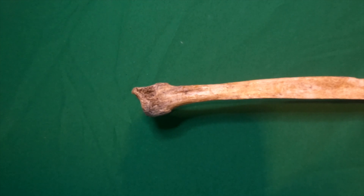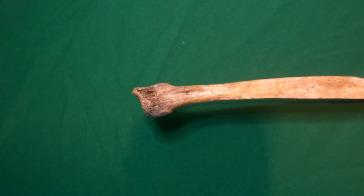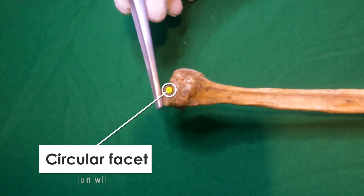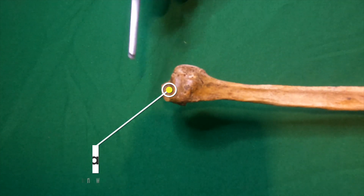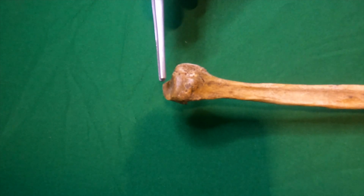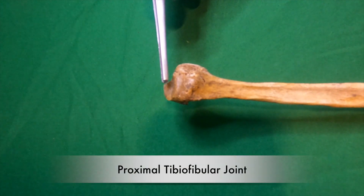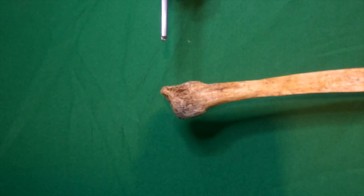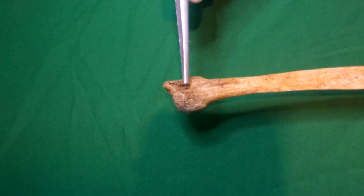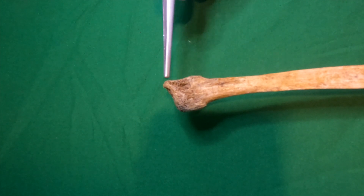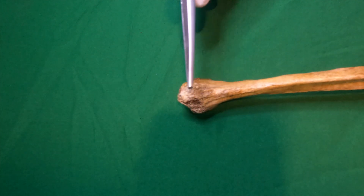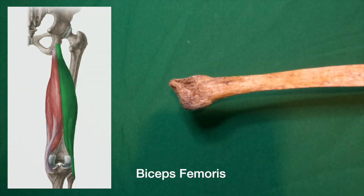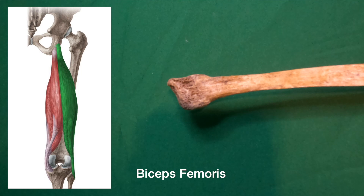Let's look at the head. Its superior medial surface bears a circular articular facet to articulate with the lateral condyle of the tibia, forming the proximal tibiofibular joint. Just posterolateral to this facet, the bone projects superiorly as a blunt apex. The head of the fibula receives the insertion of biceps femoris on its anterolateral aspect.